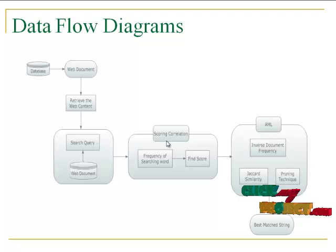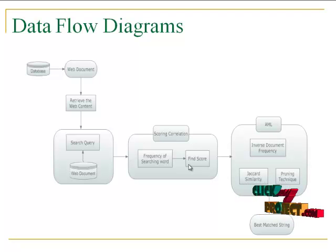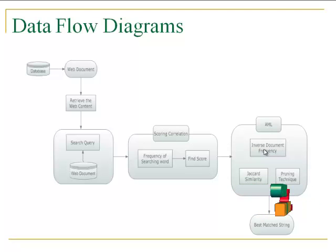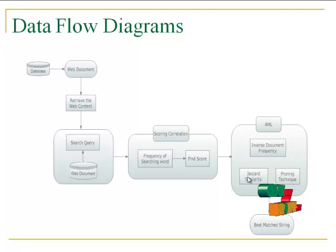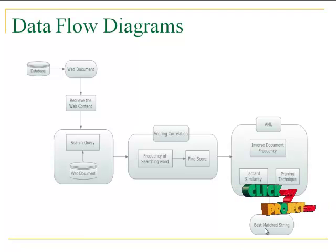To overcome this drawback, we use approximate membership localization with a web-based framework. First, we calculate the scoring correlation for a particular searching query — finding the frequency of the search word and computing a score for the query value. Then the AML algorithm finds the inverse document frequency of the given query and the Jaccard similarity of the search query. A pruning technique is used to avoid redundancy of the best matched string. Finally, we get the best match for the searching query.